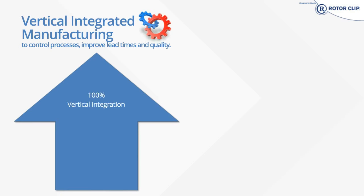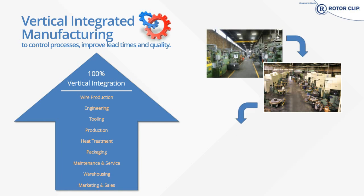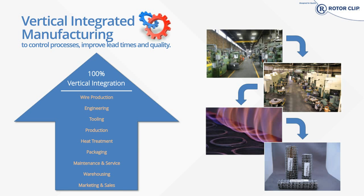RotorClip is a vertically integrated company. This means everything from wire production to engineering, tooling, production of actual parts, heat treatment, packaging, maintenance and service of our equipment and tooling, warehousing, and also our marketing, inside sales, and outside sales are all done in-house. This helps us control lead times, which leads to lower prices and lower minimum order quantities for our customers. On the right side of the screen there are four pictures: the top one is a view of our rolling mills, below that is our stamping room, below that a couple of rings going through the heat treat process, and finally our shrink-wrapped packages ready to be shipped to our customers.